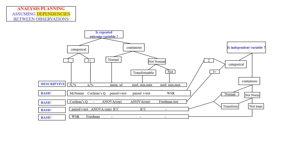When variables are not independent but dependent — such as measuring body weight at two time points — the tests change. If the outcome variable is categorical, we do not use chi-square; we use McNemar's test. If the outcome variable is continuous and normally distributed and we are comparing two groups, instead of a t-test we use a paired t-test. If the outcome is not normally distributed and we are comparing two groups, we use the Wilcoxon signed-rank test. When comparing means across more than two dependent groups, instead of ANOVA we use repeated measures ANOVA.